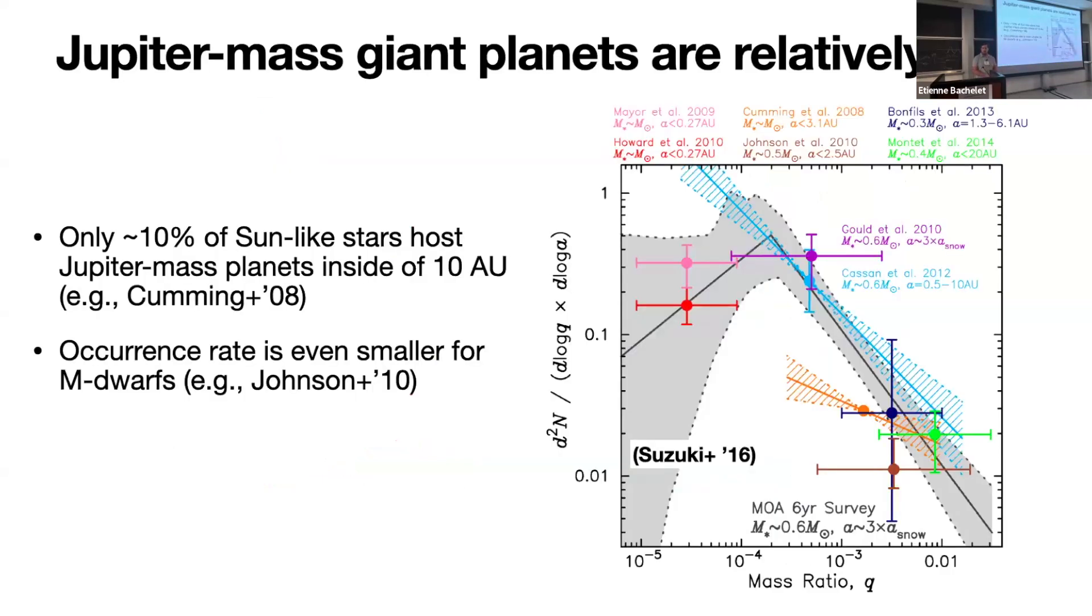Okay, so another important point to bear in mind when thinking about dynamical instabilities and ejections in the sorts of systems that Roman will be probing is that Jupiter-mass planets are relatively rare. We know from radial velocity surveys, for example, that something like only 10% of sun-like stars hosts Jupiter-mass planets or Jupiter-scale planets within about 10 AU. And for the sort of smaller-mass M-dwarf hosts that Roman will be probing, this fraction is even lower. And this is corroborated by micro-lensing detections as well. So this is a nice plot taken from Suzuki et al., 2016, showing all the occurrence rate information that has been derived from various sources. And if you look at 10 to the minus 3, where Jupiter sits, the relative frequency or relative occurrence of Jupiter-mass planets is fairly low.